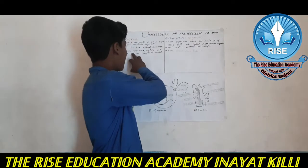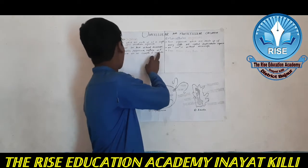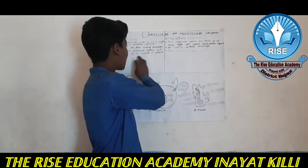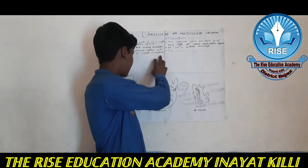Examples of unicellular organisms are amoeba, paramecium, euglena, and chlamydomonas.